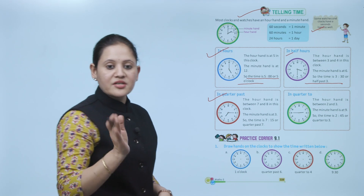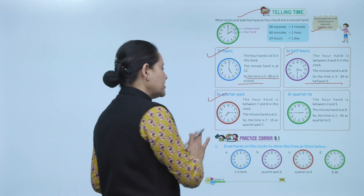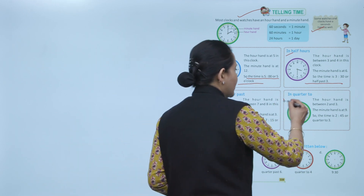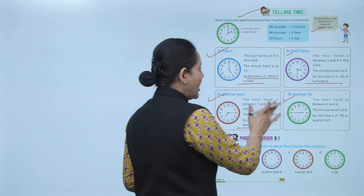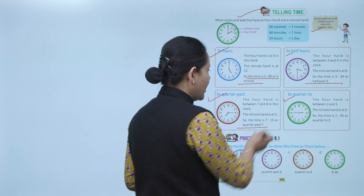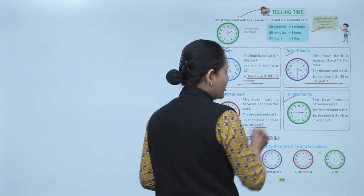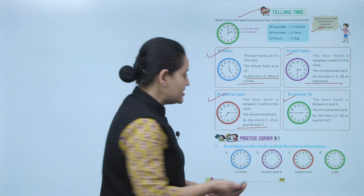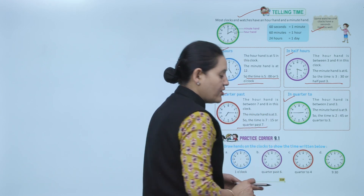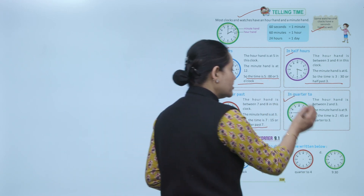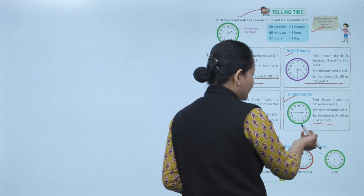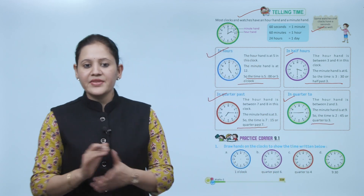Quarter past 7, meaning 15 minutes have passed. For quarter to: here the hour hand is between 2 and 3, near to 3, and the minute hand is on 9. We read the time as 2:45, or quarter to 3 — meaning there are still 15 minutes left to reach 3 o'clock.